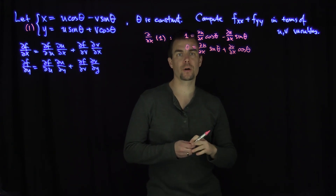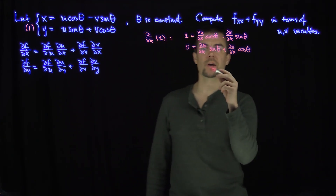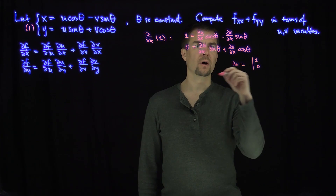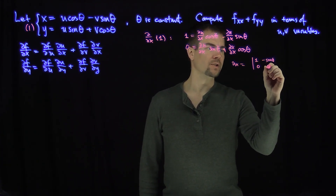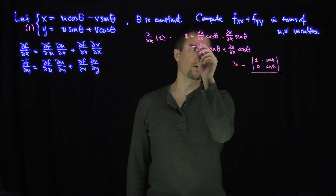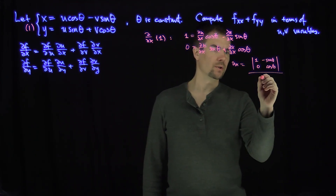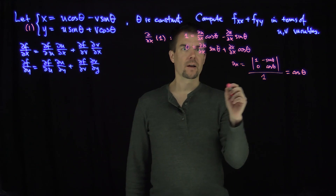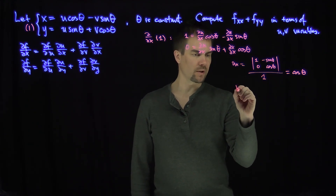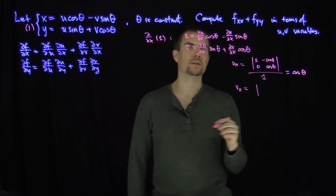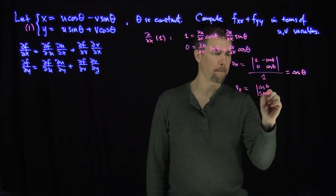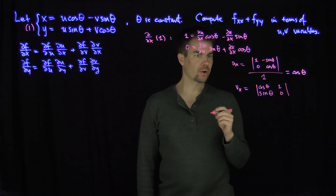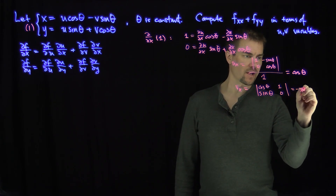Applying Cramer's rule: ∂u/∂x equals the determinant of [1, 0; -sinθ, cosθ] over cosine squared plus sine squared, which equals 1. So ∂u/∂x = cosθ. Similarly, ∂v/∂x equals the determinant of [cosθ, sinθ; 1, 0], giving ∂v/∂x = -sinθ.